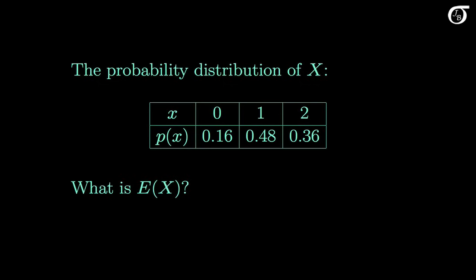Suppose we want to calculate the expectation of the random variable X — in other words, how many heads will we get on average? It doesn't make sense to take the ordinary average of 0, 1, and 2, since that wouldn't be fair to the values that have a greater probability of occurring. If the values were all equally likely, then the expectation formula simplifies to the ordinary average. But here 0, 1, and 2 are not equally likely, and we need to use the expectation formula.